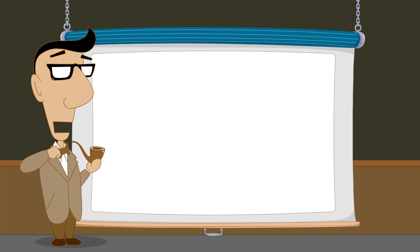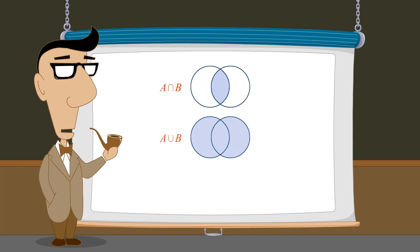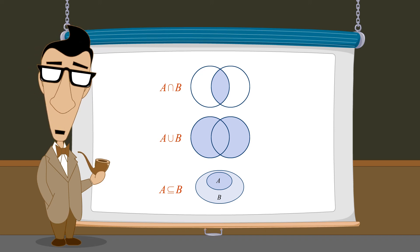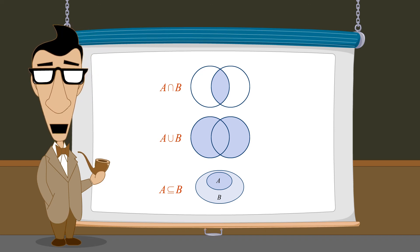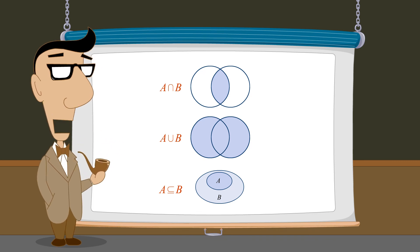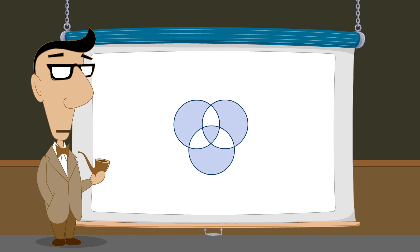So far, we have seen how various relations between sets, as well as set operations such as intersections and unions, can be represented using Venn diagrams. In the next lecture, we will see how Venn diagrams can be used to visualize more complex operations.